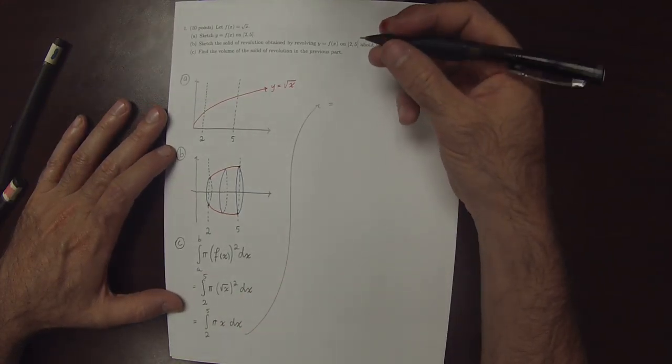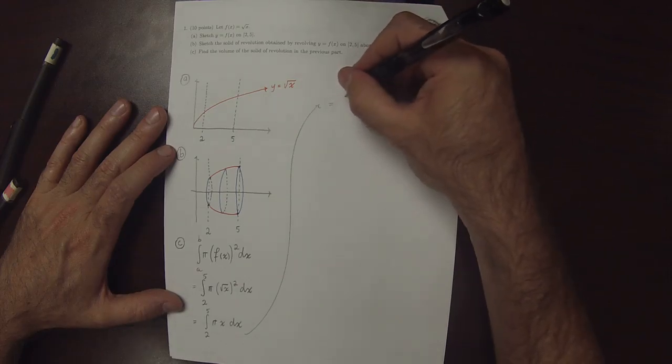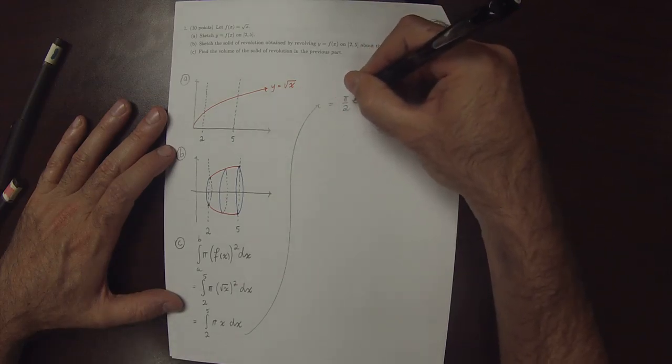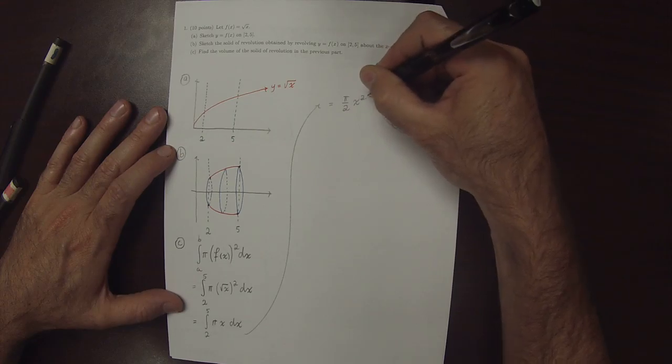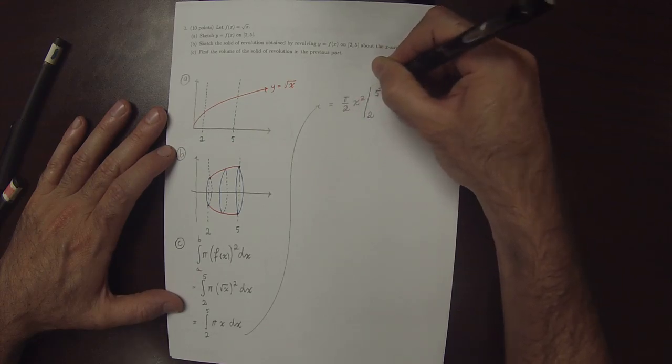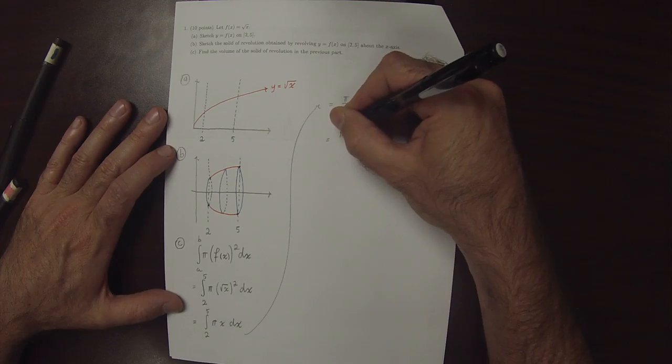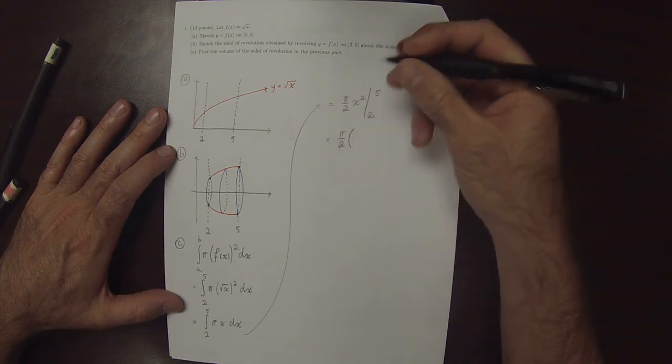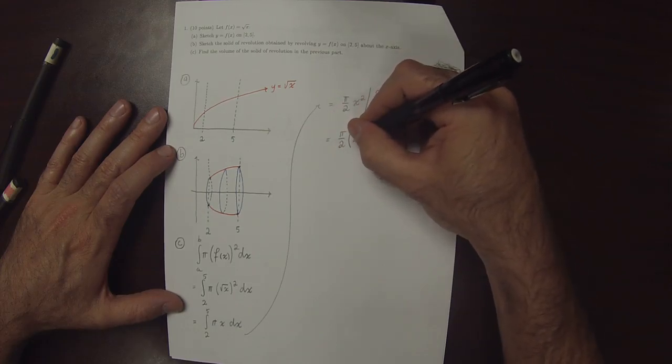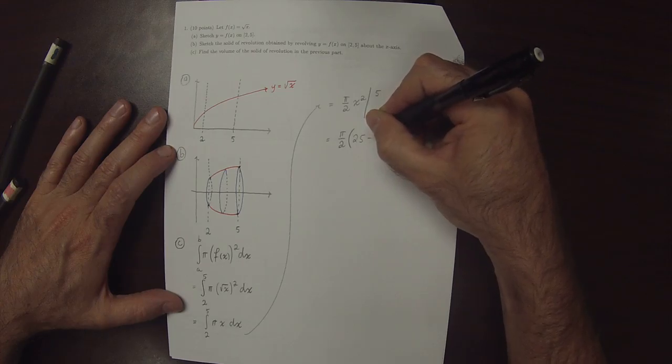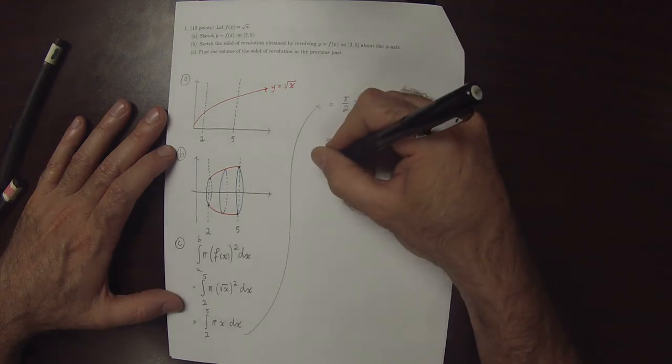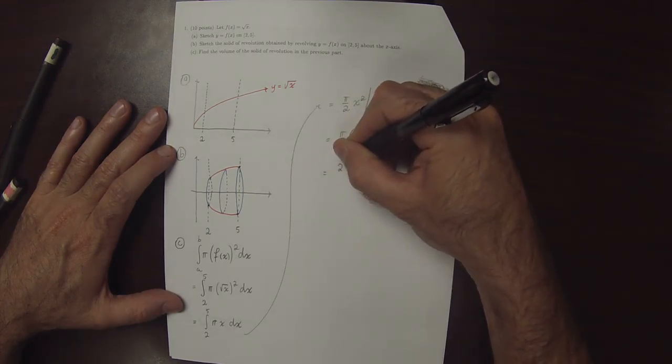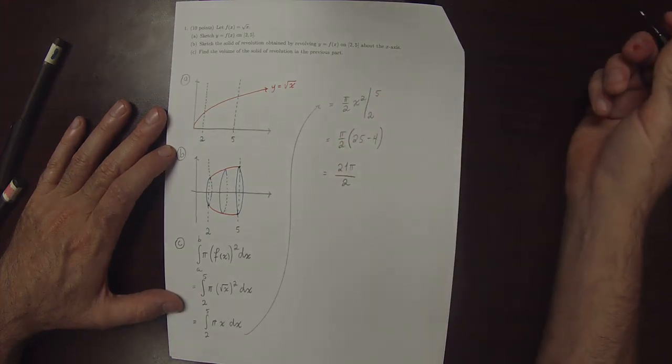So that is pi over 2 x squared evaluated from 2 to 5. So that's pi over 2 multiplied by 25 minus 4, which is 21 pi over 2.